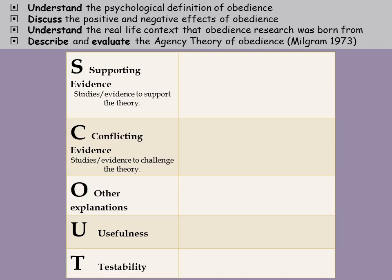When evaluating agency theory, it's important to remember that it is a theory, not a study. I suggest using a process called SCOUT. S stands for supporting evidence — are there studies that support what agency theory says? C is conflicting evidence — is there anything that disagrees with agency theory?